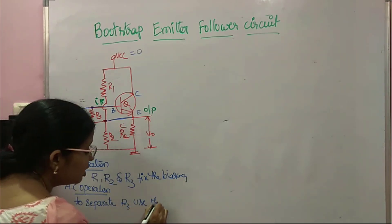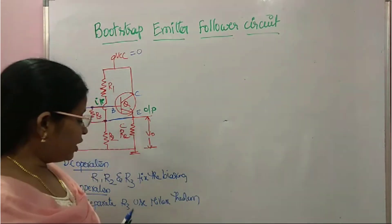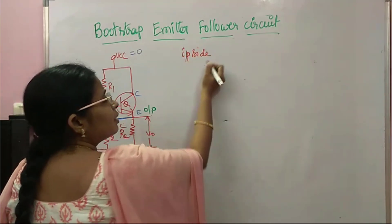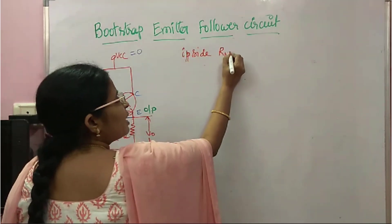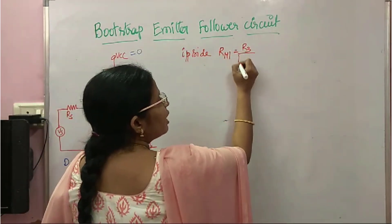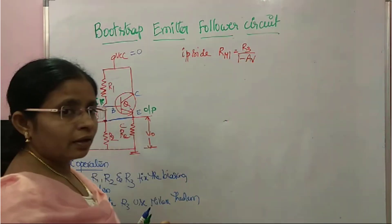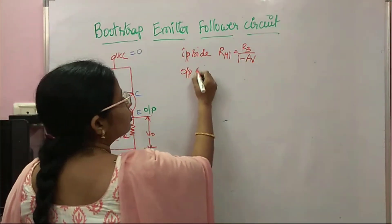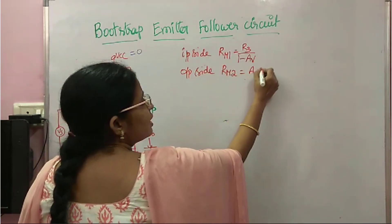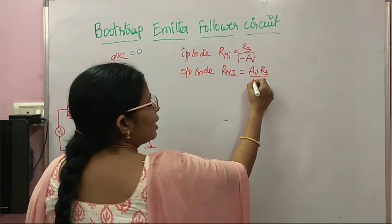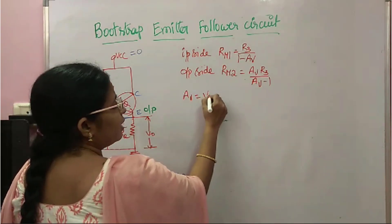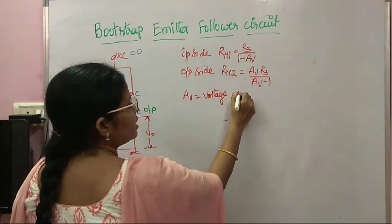To separate R3, we use Miller's theorem. According to Miller's theorem, the input-side equivalent resistor Rm1 equals R3 / (1 − Av), and the output-side equivalent resistor Rm2 equals Av·R3 / (Av − 1), where Av is the voltage gain V0/Vi.